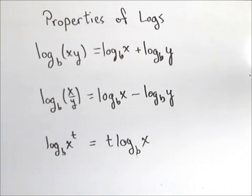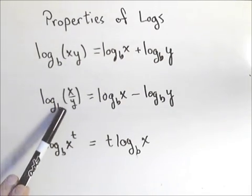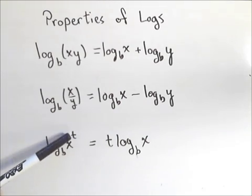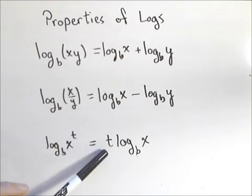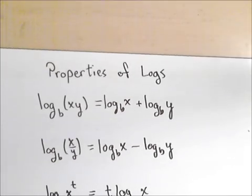In this video, we're going to work a little bit with properties of logs. In particular, our three main properties. The first is the product to sum property. The second is the quotient to difference property. And finally, the exponent property, which allows us to pull an exponent out front. So we're going to use these three properties in order to solve some expressions involving logarithms.